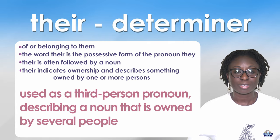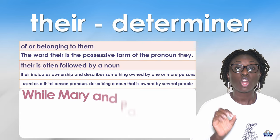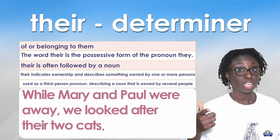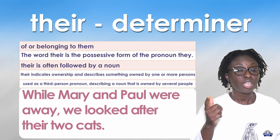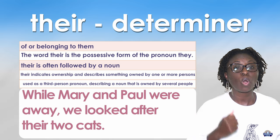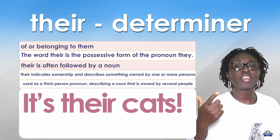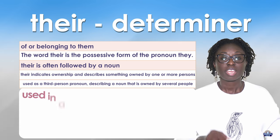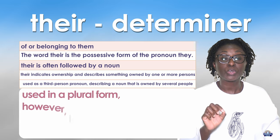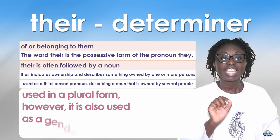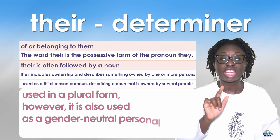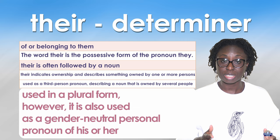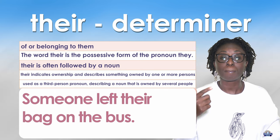Let's look at some examples. While Mary and Paul were away, we looked after their two cats. Their two cats — their is followed by a noun, referring to Mary and Paul. It's their cats, referring to someone. Their is generally used in a plural form. However, it is also used as a gender-neutral personal pronoun in place of his or her. For example, someone left their bag on the bus.